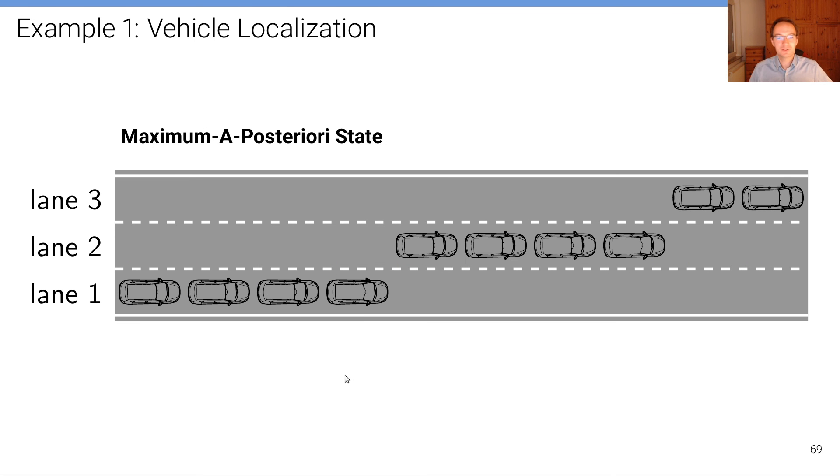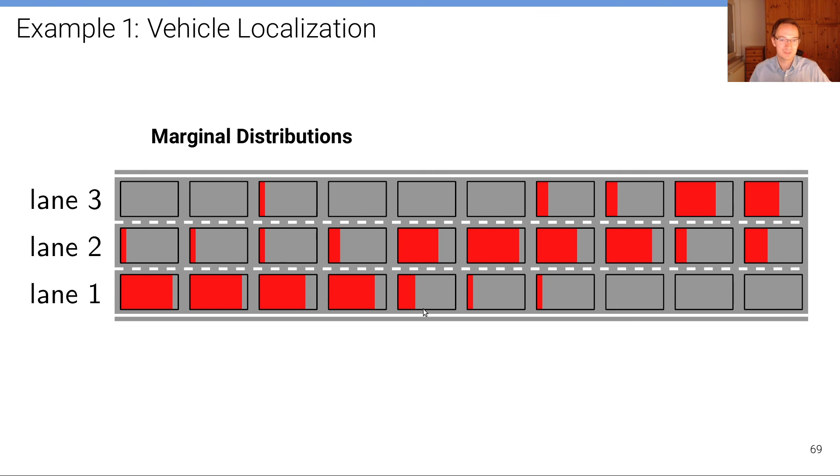Now this was the marginal solution, but we can also apply the max product algorithm to obtain the maximum a posteriori solution. And this is the MAP solution that we get. This is the solution that we wanted, and that's the solution that we get if we use exactly this smoothness or pairwise term that we've just introduced.